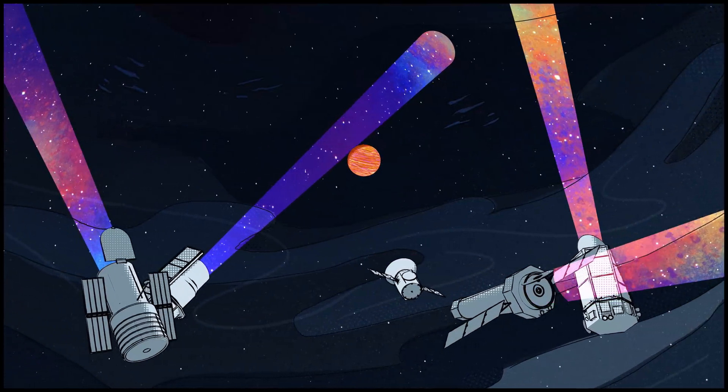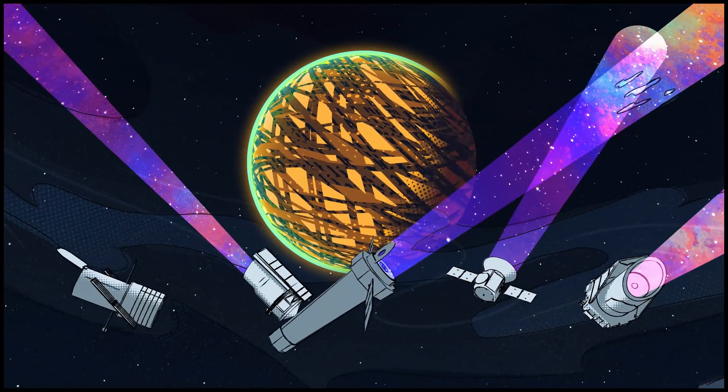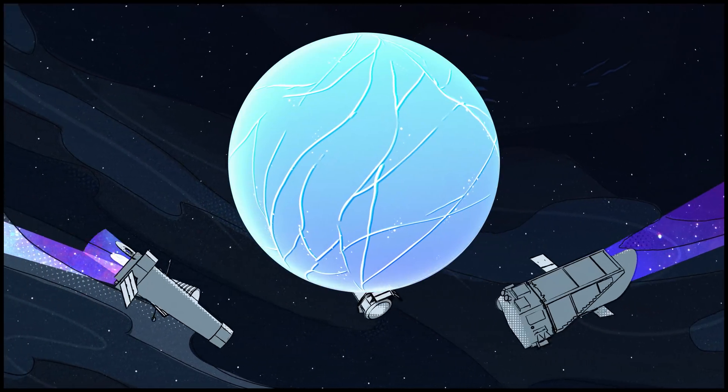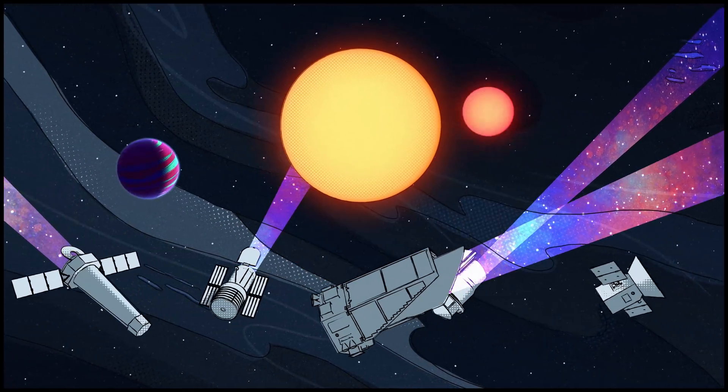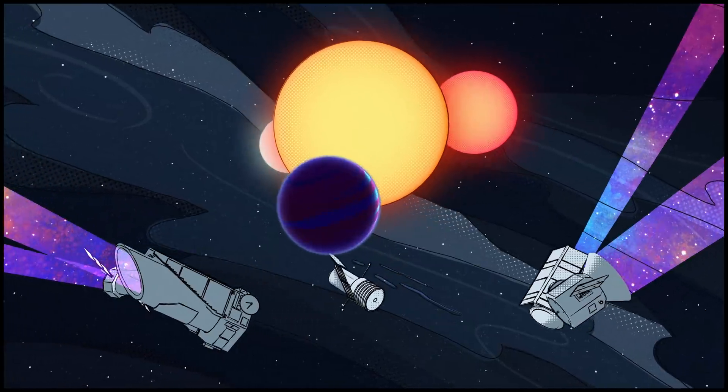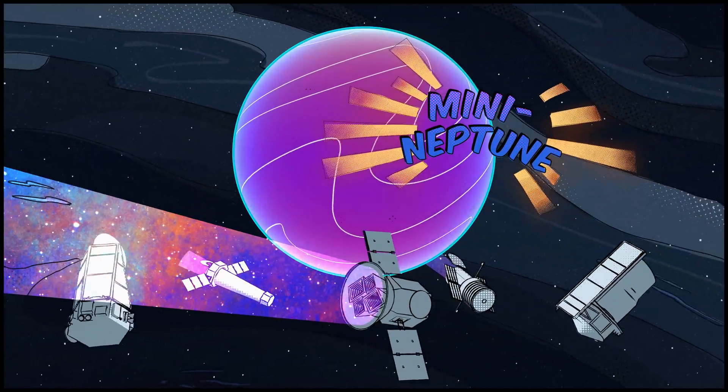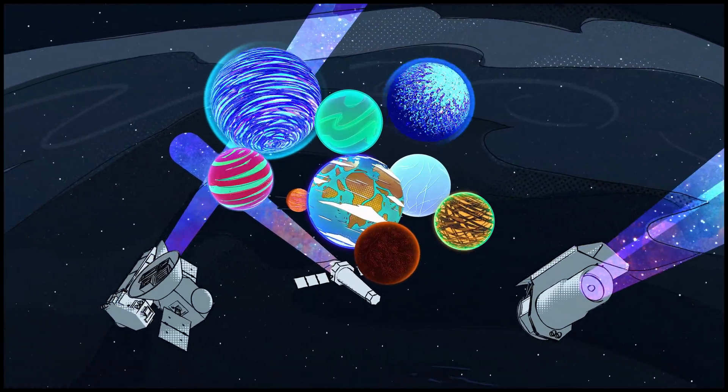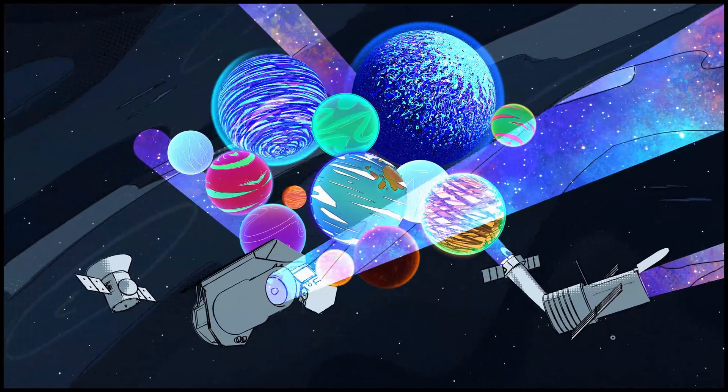Giant ones, tiny ones, rocky and gaseous, deep frozen and superheated. Planets with two or three suns, super-Earths, mini-Neptunes, and worlds that were just plain weird, like nothing we had ever seen before.